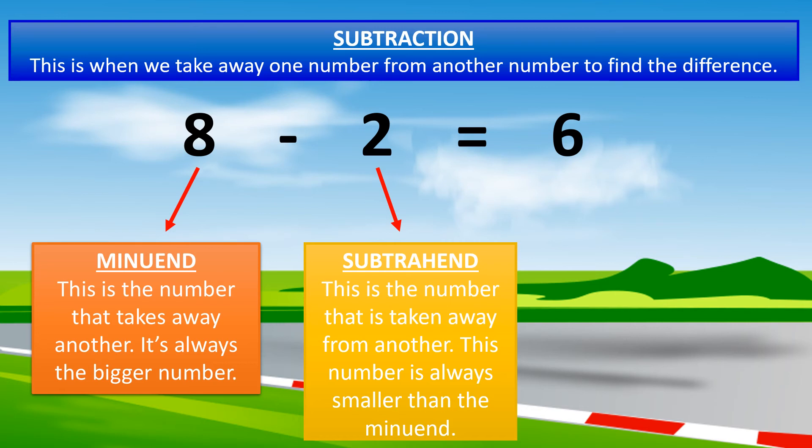Great. The subtrahend is the number that is taken away from another. This number is always smaller than the minuend.